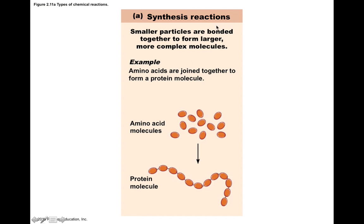An example of a synthesis reaction could be the building of a protein. Proteins are made of building blocks called amino acids. Individual amino acids, which are all types of molecules, can combine through a synthesis reaction to form one large protein molecule. So from A and B you can make molecule AB — in this example it's just a longer chain of a molecule. This is an example of a synthesis reaction.